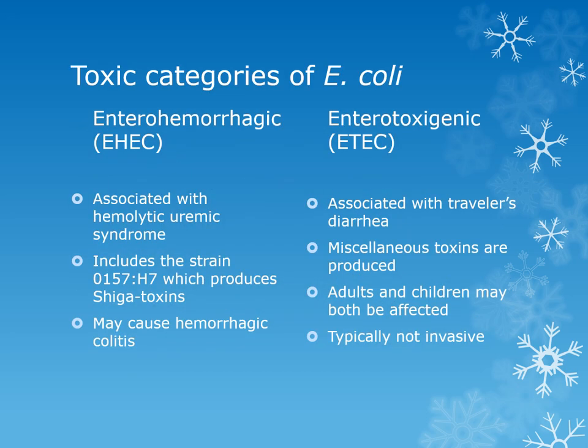There are four categories of toxin-producing E. coli, but the two most common are the enterohemorrhagic E. coli (EHEC) and the enterotoxigenic E. coli (ETEC). These toxic strains have been associated with hospitals, daycare centers, nurseries, and contaminated food — there was a nationwide EHEC outbreak on romaine lettuce in January 2017. EHEC strains are associated with hemolytic uremic syndrome, including O157:H7, which produces Shiga toxins and causes about 75,000 infections and 60 deaths annually, and may cause hemorrhagic colitis.